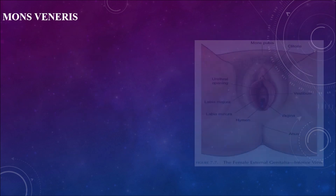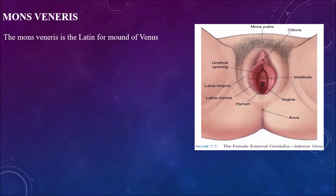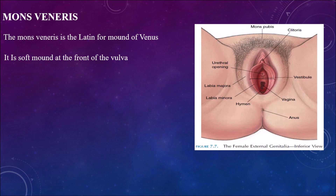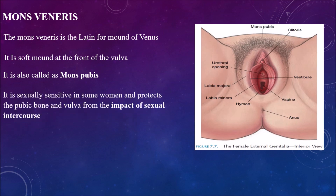First, mons veneris. 'Mons veneris' is Latin for 'mound of Venus.' It is the soft mound at the front of the vulva — the front soft mound part visible in the diagram. It is also called the mons pubis or pubic region.